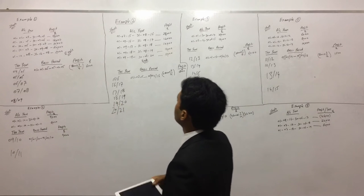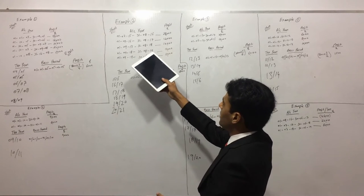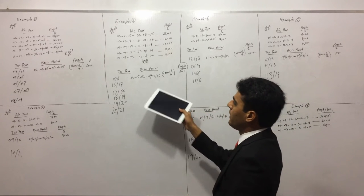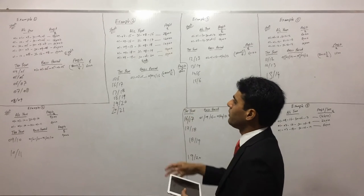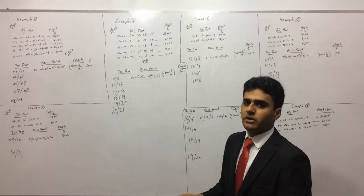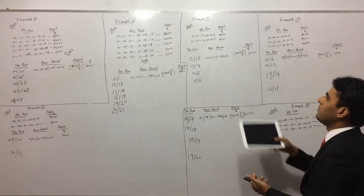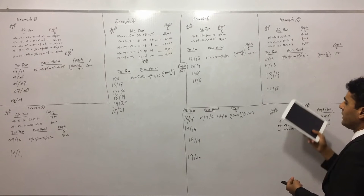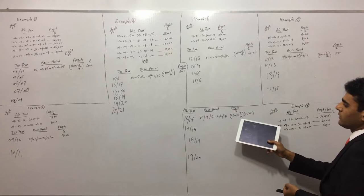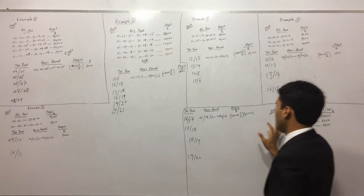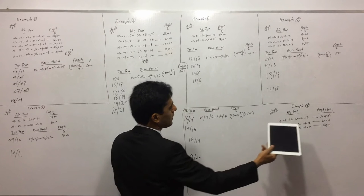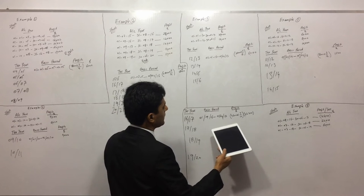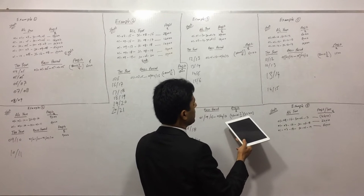We've already done the first one. In the second example, the accounting period was 14 months but our basis period is 9 months, so we took 9 months out of 14. That's why our profit is 18,000 pounds in the basis period. In the same way, 3 months out of 18 months gives 6,000 pounds. In example 5, it's 3 of 12 months, and in example 6, 46,000 out of 10 months — so 7 months out of 10 gives 32,200, which is a loss shown in brackets.